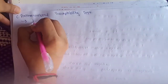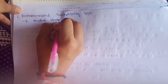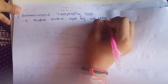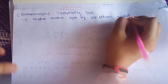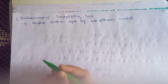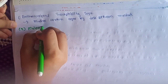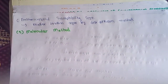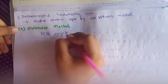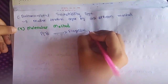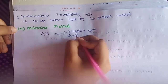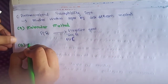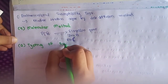For antimicrobial susceptibility testing — to check resistance for better treatment — we use the disk diffusion method on Mueller-Hinton agar. For molecular methods, PCR is helpful; the genes targeted are the flagellin gene, fliC, and irobN.